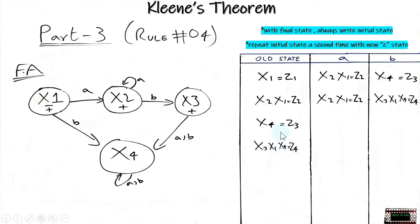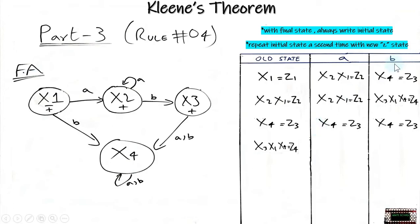Coming to the third row, which is x4: if the input is a it remains in x4, and if the input is b it also remains in x4 — so it's a dead state.